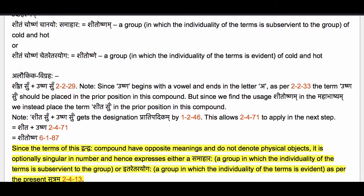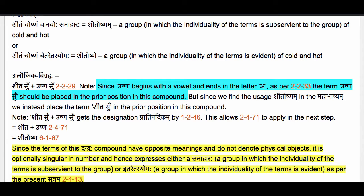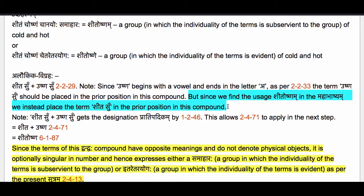The Alokika Vigraha is Sheet Su plus Ushna Su, compounding prescribed by Sutram 2.2.29 Charthe Dvandvaha. The question comes: which term should be placed in the prior position? Since Ushna begins with a vowel and ends in the letter A, as per Sutram 2.2.33 Ajadya Dantam, Ushna should actually be placed first. But since we find the usage Sheetoshnam in the Mahabhashyam, we instead place Sheetasu in the prior position, overwriting rule 2.2.33.